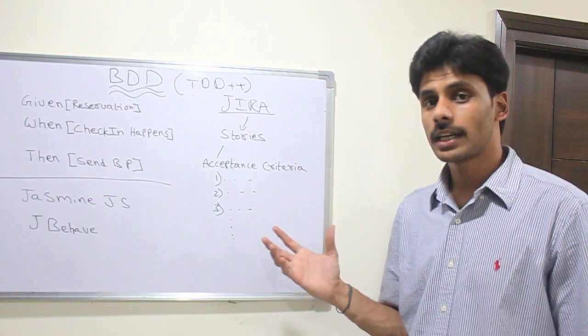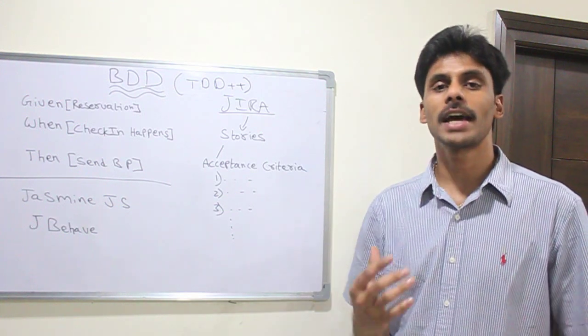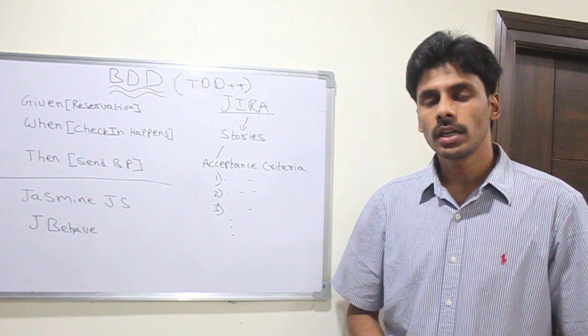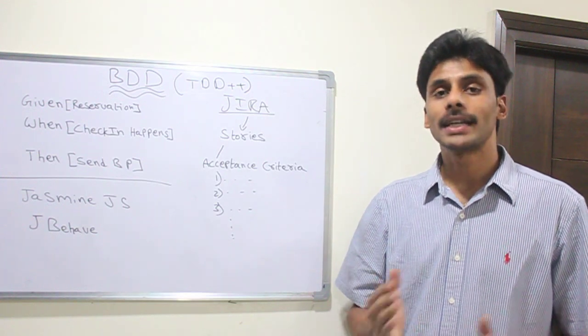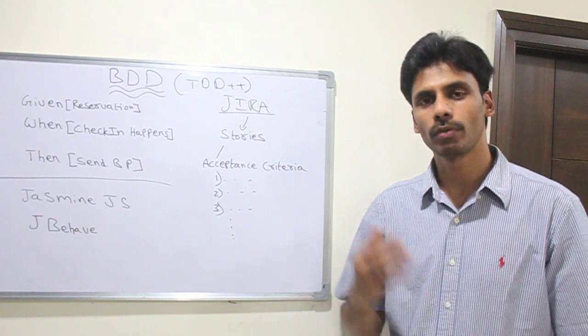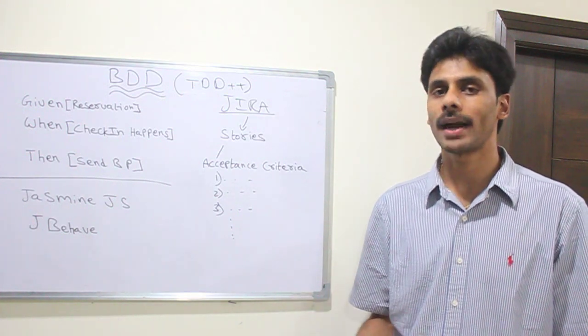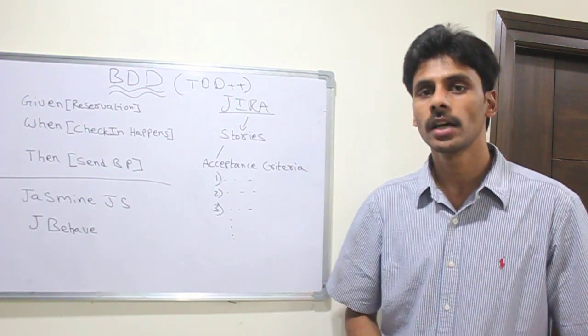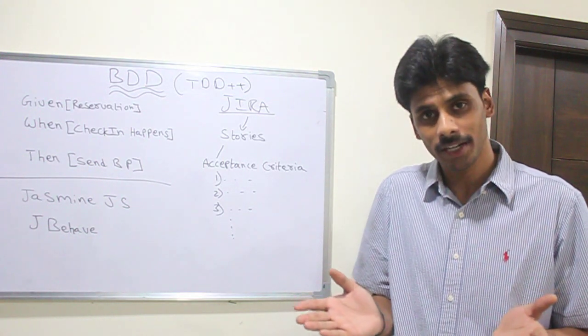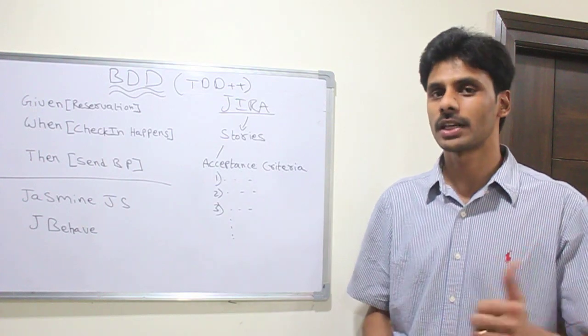That's all BDD does. It actually links or gives us a direct link between the requirements and the actual implementation. We do the tests first, at least we try to do our tests first even before we start our implementation. It is a very good practice to do BDD or TDD and then start our implementation. Initially when you write your test they will fail because there is no implementation, then you write your implementation, run the test, and make them pass.